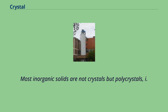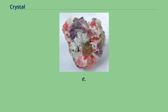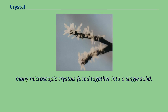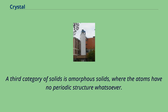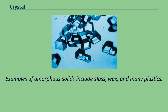Most inorganic solids are not crystals but polycrystals — many microscopic crystals fused together into a single solid. Examples of polycrystals include most metals, rocks, ceramics, and ice. A third category of solids is amorphous solids, where the atoms have no periodic structure whatsoever. Examples of amorphous solids include glass, wax, and many plastics.